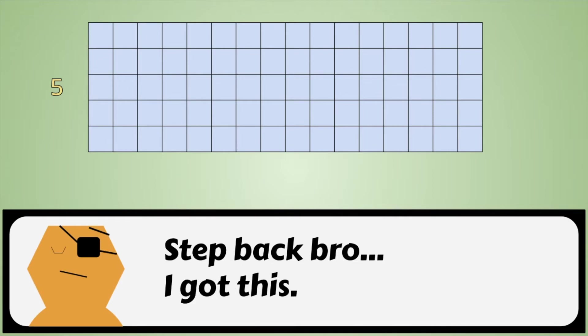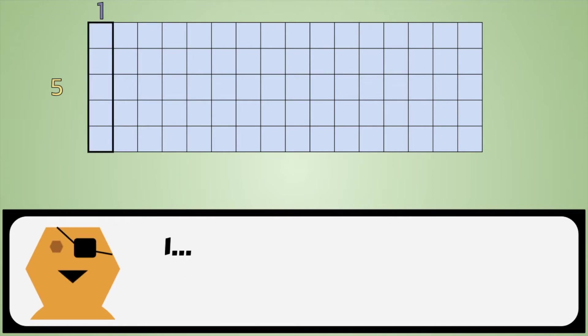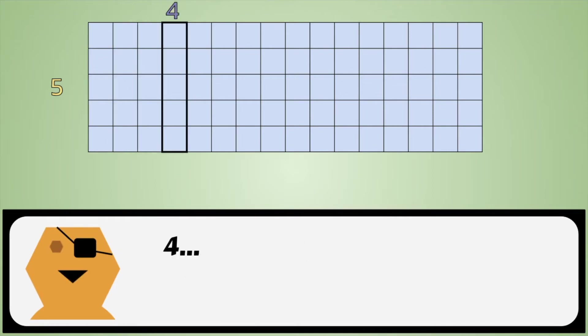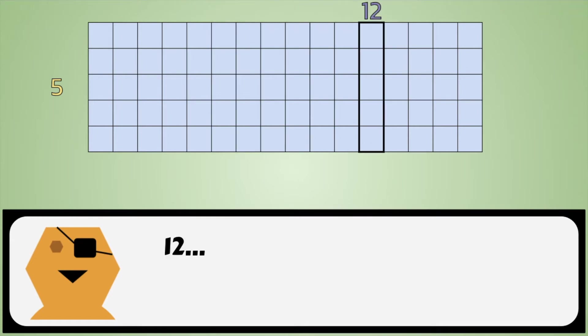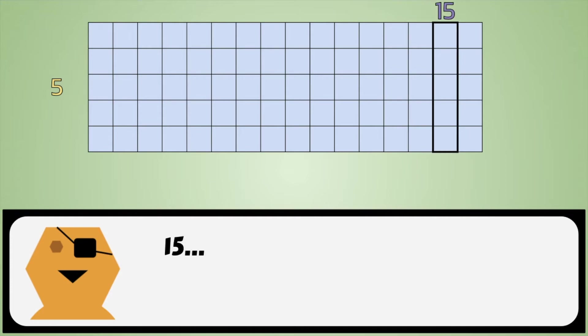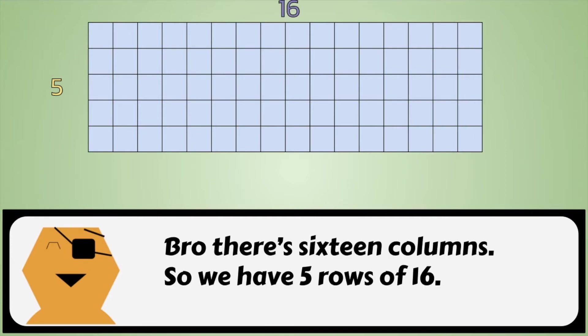I got this. One, two, three, four, five, six, seven, eight, nine, ten, eleven, twelve, thirteen, fourteen, fifteen, sixteen. Bro, there's sixteen columns.